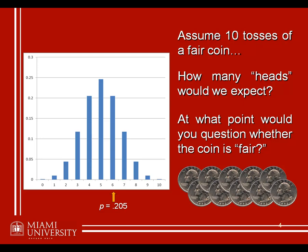What we do is we set some sort of criterion, or threshold, or cutoff, at which point we say if I see any number of heads greater than this number, I'm going to call that too unlikely. So let's say we set a cutoff and say anything with greater than 7 heads — in other words, if 8, 9, or 10 heads show up — I'm going to call that too unlikely.